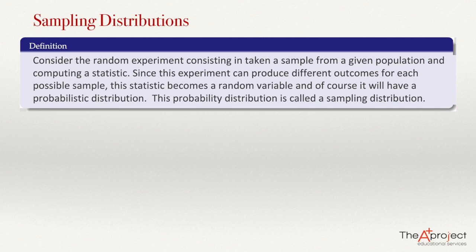Let's start with the definition. Consider the random experiment consisting in taking a sample from a given population. This is what we usually do in statistics, and computing statistics. Since this experiment can produce different outcomes for each of the possible samples, this statistic becomes a random variable. And of course, it will have a probability distribution. This probability distribution is called a sampling distribution.